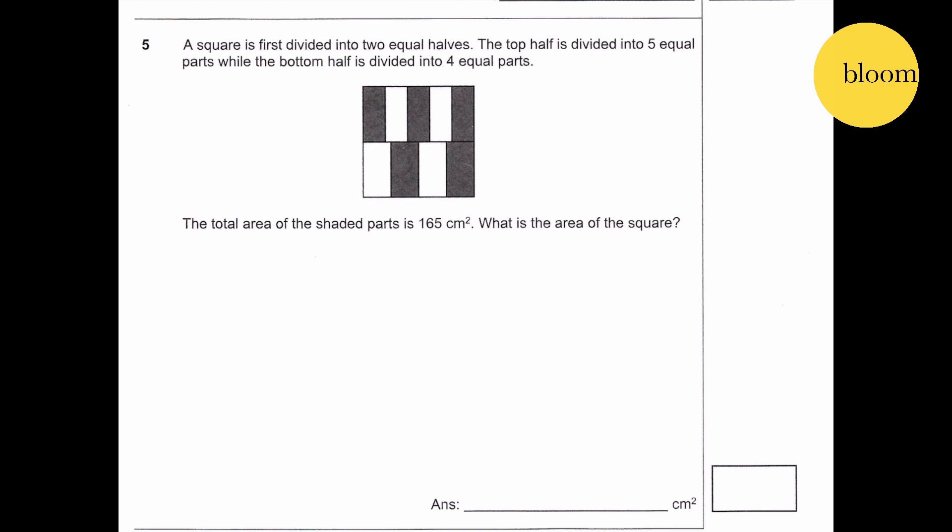Question 5. A square is first divided into 2 equal halves. The top half is divided into 5 equal parts while the bottom half is divided into 4 equal parts. The total area of the shaded parts is 165 cm square. What is the area of the square?